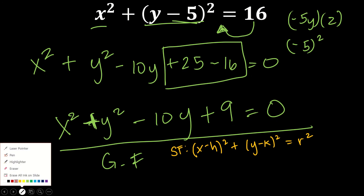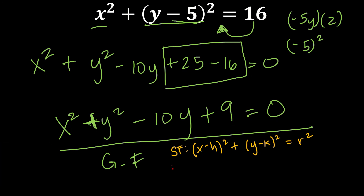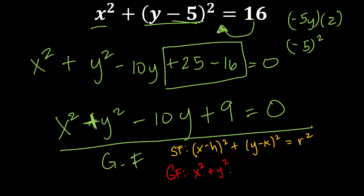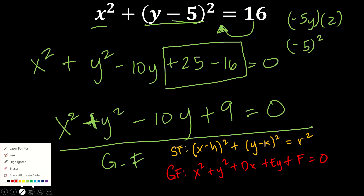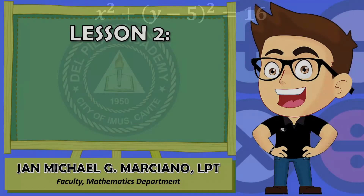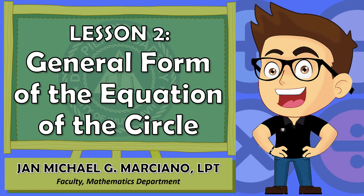To summarize: the standard form is (x minus h) squared plus (y minus k) squared equals r squared, and the general form is x squared plus y squared plus dx plus ey plus f equals zero. The coordinates of the center are (h, k). That is lesson number 2 — the general form of the equation of the circle. That is all for today, Grade 10. Take care and God bless.